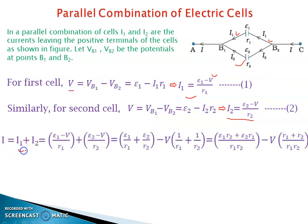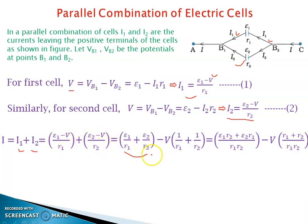After substituting the values of I1 and I2, we group the E1/R1 and E2/R2 terms together. The remaining factors give −V(1/R1 + 1/R2). After solving, we can write V·(R1 + R2)/(R1·R2) = (E1·R2 + E2·R1)/(R1·R2) − I.